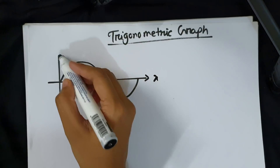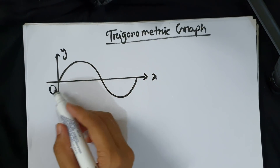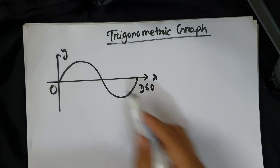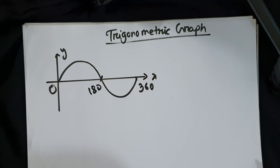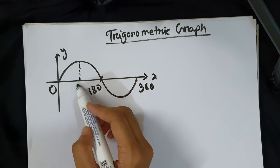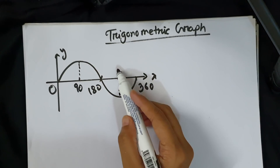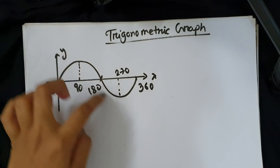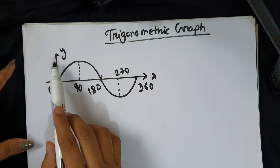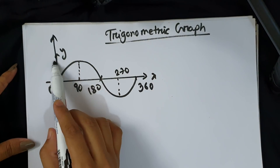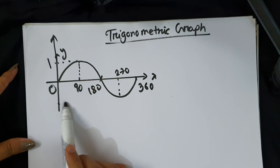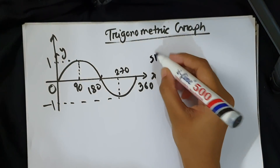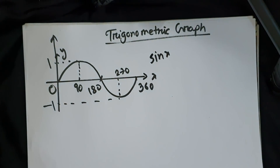This is the x-axis and y-axis. The complete cycle of sin x is 360 degrees. Half cycle is 180 degrees. Maximum point is at 90 degrees and minimum point is at 270 degrees. Total cycle is 360 degrees, with maximum y-coordinate of 1.